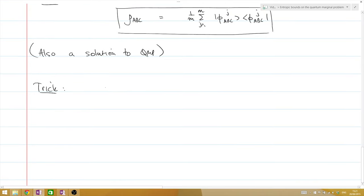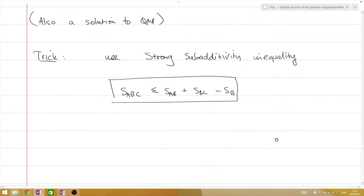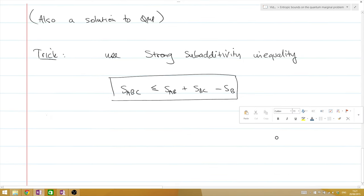The trick now is to use the state rho ABC in combination with an entropic bound to derive, finally, a bound on the largeness of M, the number of solutions, the number of independent solutions to the quantum marginal problem. And the inequality we're going to use is the strong subadditivity inequality. This is a powerful entropic inequality which relates the entropy of a tripartite system to its reductions on AB, BC, and just B.